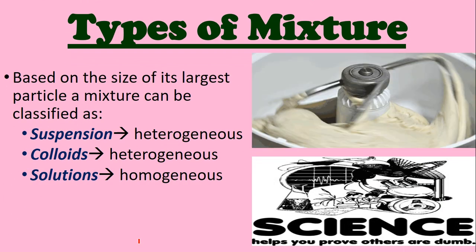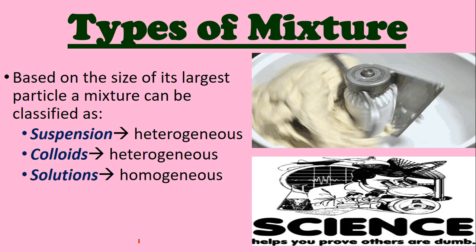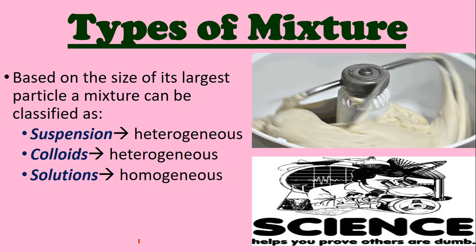So, types of mixtures. Remember, mixtures is one of the classifications of matter, and it can be heterogeneous or homogeneous — it's when things are combined. Types of mixtures are classified based on the size of the largest particles. You have three main types: suspensions, which are heterogeneous; colloids, which are heterogeneous; and solutions, which are homogeneous.